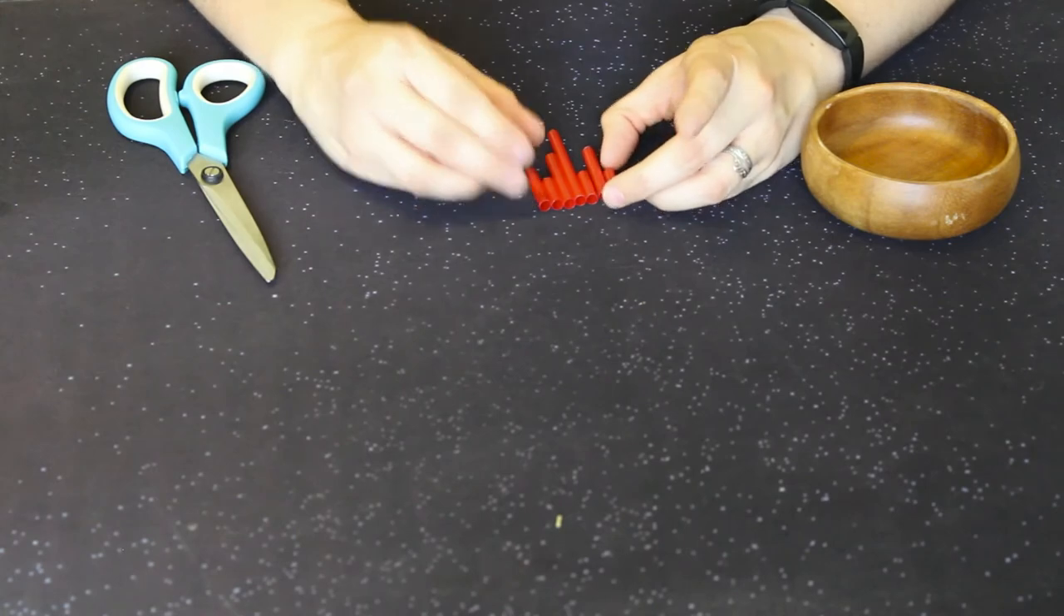Next, decide on the pattern of your necklace. Do you want the longest segment in the middle or at the end? Do you want all different length segments with no pattern at all? Once you have decided, cut the straw into the segments you'll need to make your pattern.